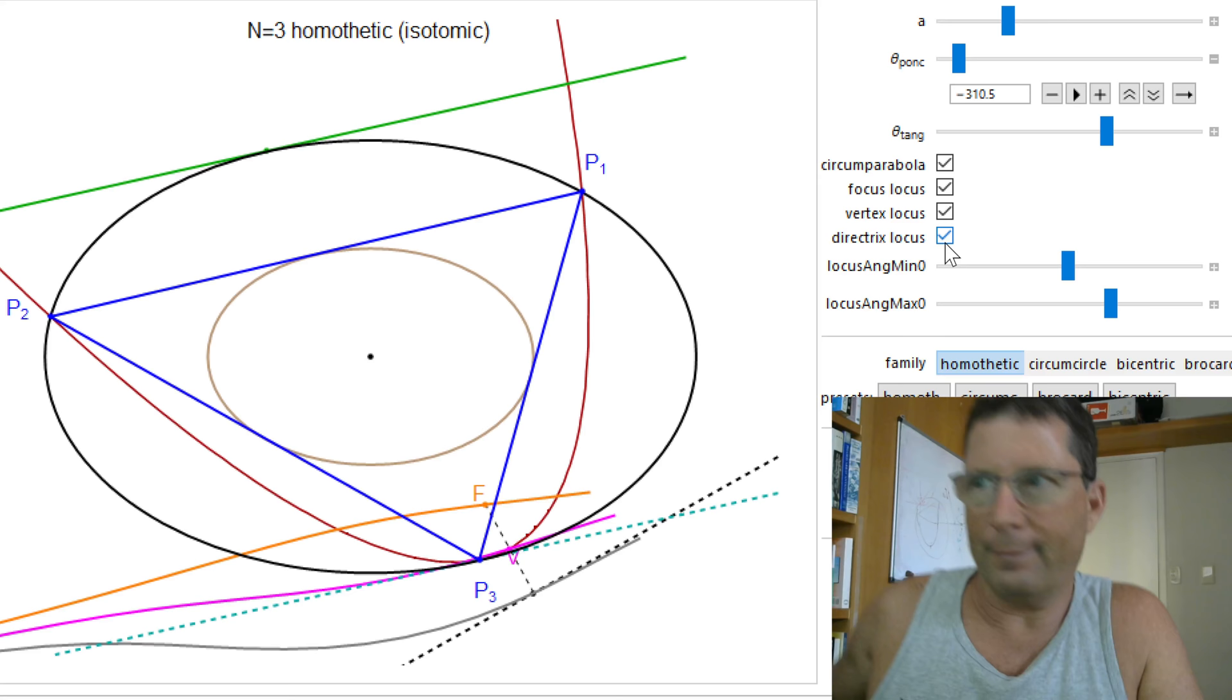OK, so these are the properties to the isotomic image of a tangent to the Steiner for the homothetic family. Things that I haven't explored here yet.